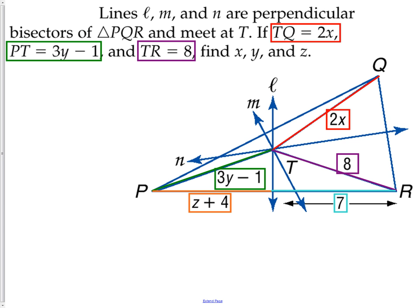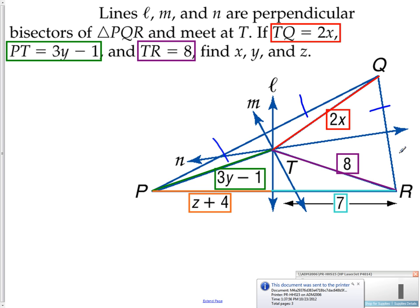Now let's use this information to solve a question. The picture looks a little confusing — we just need to take a moment to dissect it and figure out the pieces. We are given that L, M, and N are perpendicular bisectors. That means line L bisects one side so that piece equals the other piece. M is a perpendicular bisector which cuts another side in half, and N cuts the third side. So all three sides of the triangle are being bisected in half.